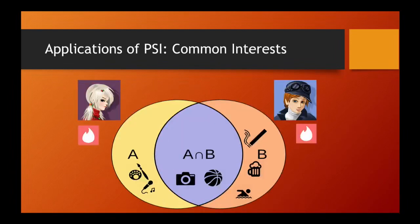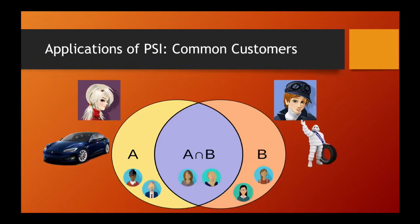PSI is applicable in many scenarios. Suppose two strangers on the internet want to find out their common interests before deciding whether they're going to be friends or not. They don't want to let the other party know their uncommon hobbies. PSI can also be useful in the commercial world. Before launching a joint promotion, two companies may want to figure out the set of common customers, but the customer list itself is a valuable commercial asset that should not be revealed.